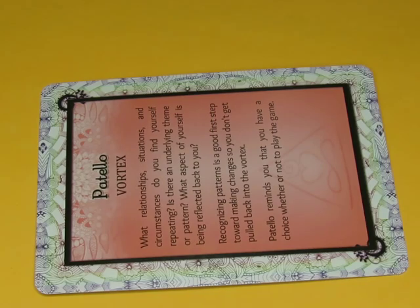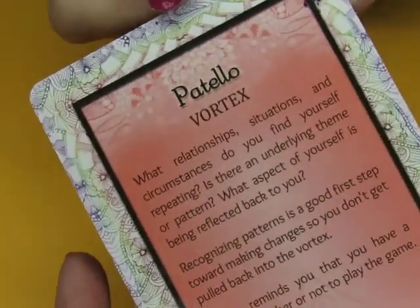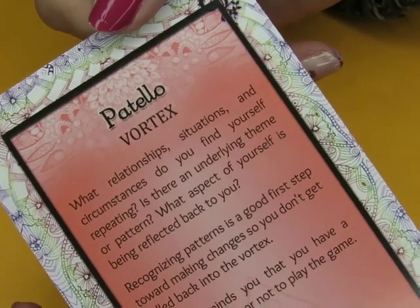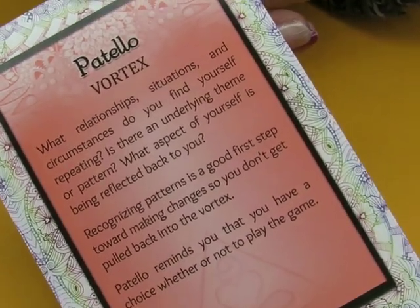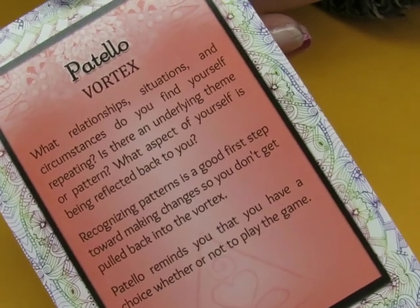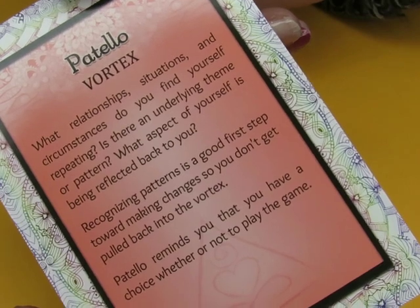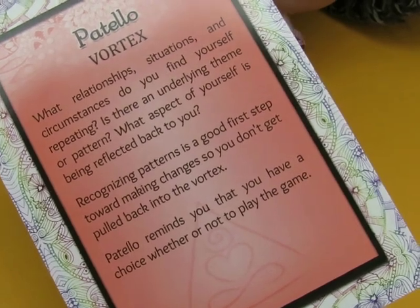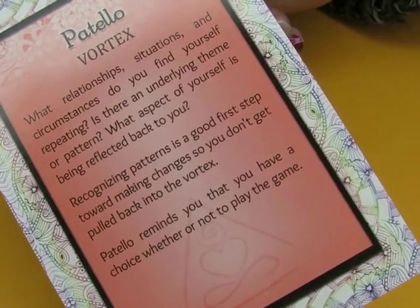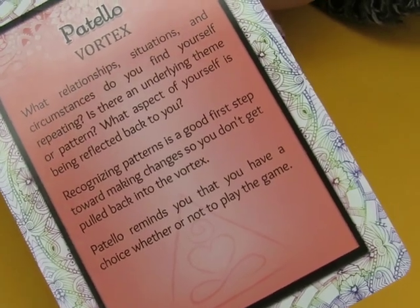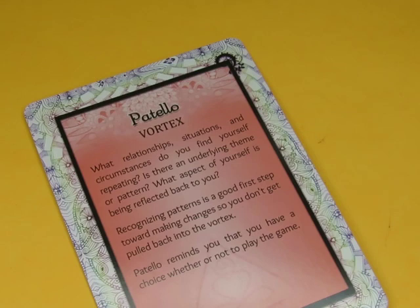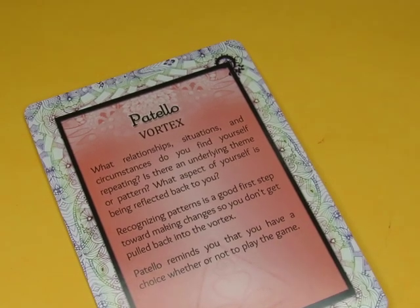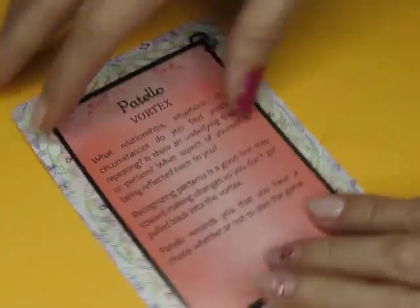Let's just pick the one on top — Vortex Patello. 'What relationships, situations, and circumstances do you find yourself repeating? Is there an underlying theme or pattern? What aspect of yourself is being reflected back to you?' Recognizing patterns is a good first step toward making changes, so you don't get pulled back into the vortex. Patello reminds you that you have a choice whether or not to play the game. Does that apply to me? Usually these things apply to me at the moment that we're doing these — not exactly sure that it does.